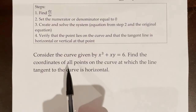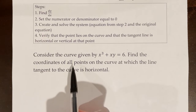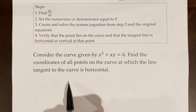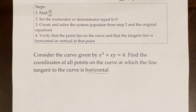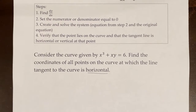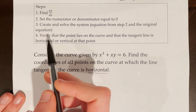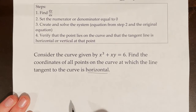Consider the curve given by x³ + xy = 6. Find the coordinates of all points on the curve at which the line tangent to the curve is horizontal. The first step is to find dy/dx, which I'll go through quickly.